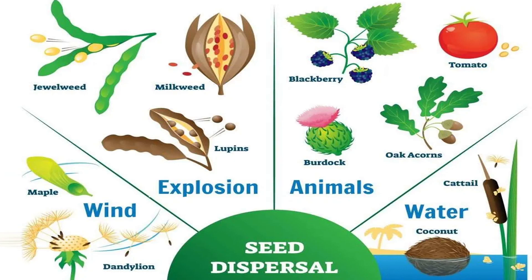Seeds of pea and mustard are enclosed in pods. These pods burst open when ripe and dry. The force of explosion helps in scattering the seeds. Pea (matar) and mustard (sarson) — their seeds are enclosed in pods, and when the pods ripen and dry out, and when they get favorable conditions, new plants grow from them.